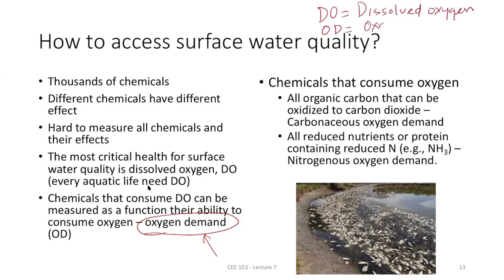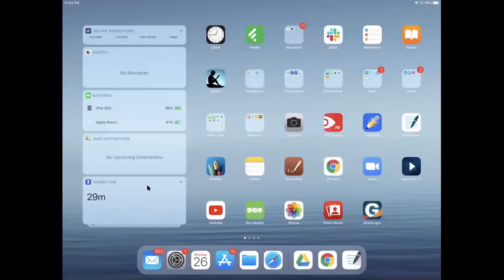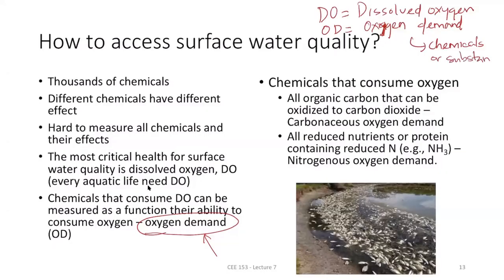Oxygen demand has two types based on the reaction. Carbonaceous oxygen demand: oxygen depletion driven by organic carbon degradation. Nitrogenous oxygen demand: oxygen depletion driven by ammonia or nitrogen compounds. The key distinction is what chemical reaction is consuming the oxygen.